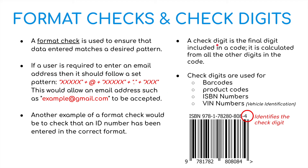A check digit is the final digit or final two digits included in a code, usually calculated from all the other digits in the code via some kind of calculation. Check digits are used for barcodes, product codes, ISBN numbers, and VIN numbers — vehicle identification numbers on cars, motorbikes, etc. The last number in the ISBN code is the check digit.